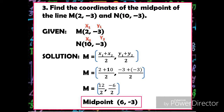We're going to use the midpoint formula and substitute the values. X₁ is 2 plus X₂ is 10, over 2; and Y₁ is negative 3 plus Y₂ is also negative 3, over 2. Positive 2 plus 10 is 12, over 2. Negative 3 plus negative 3 is negative 6, over 2. Therefore, the midpoint of line segment MN is positive 6, negative 3. Thank you. Take care.